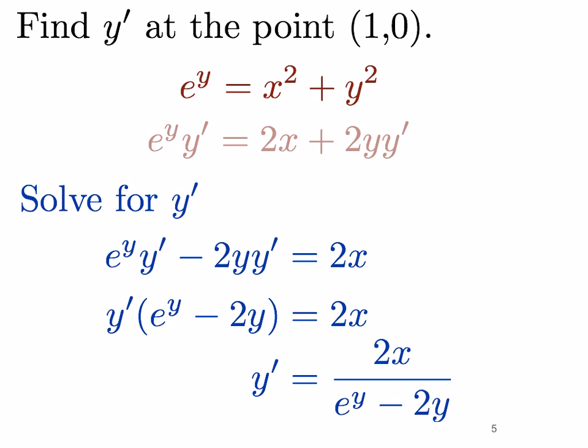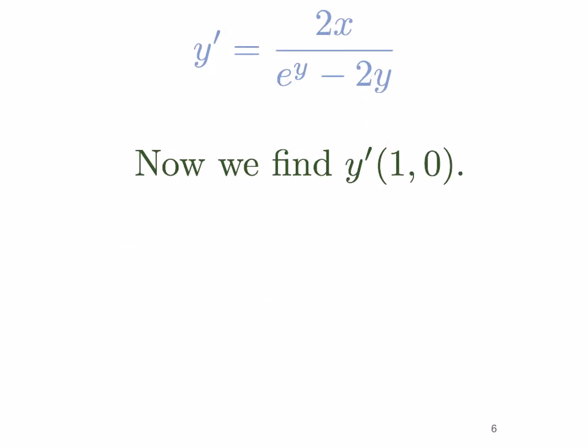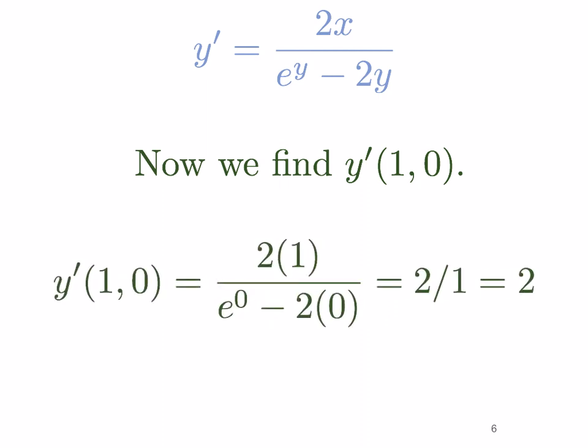Now in order to find the derivative at that point, we plug in (1, 0) into our y prime expression, and we get that y prime at (1, 0) is equal to 2 over 1, or 2.